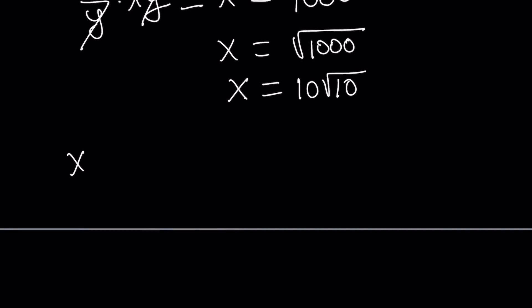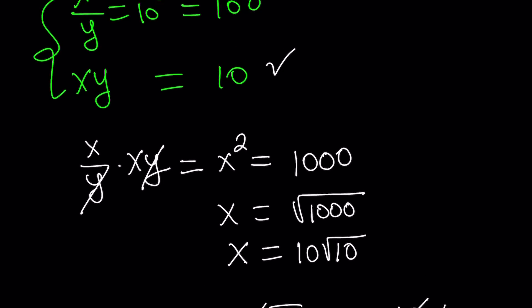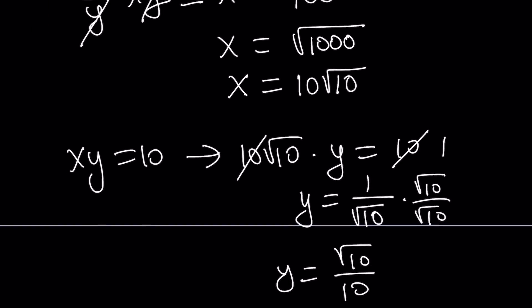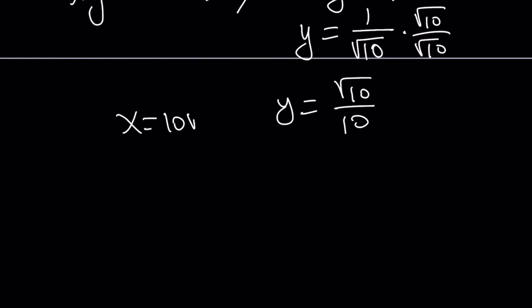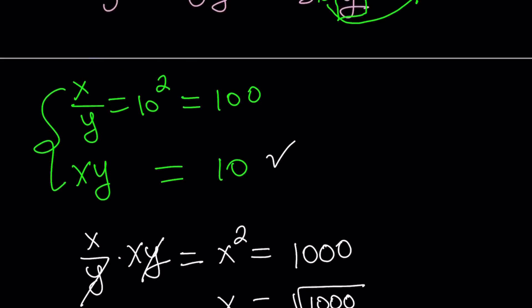Now from here we can find y by using one of the equations. Suppose you use the second one. xy equals 10. Replace x with 10 root 10 times y equals 10. You can cross out the 10s, divide by 10 both sides, and you get 1. So from here y equals 1 over square root of 10, which you can rationalize and get square root of 10 divided by 10. And x was 10 times the square root of 10. So we can kind of put these two together. One of them is 10 times the square root of 10. The other one is 1 tenth of square root of 10. Of course, they're going to contain a lot of 10s because we're dealing with base 10 here. So that's basically the first method.